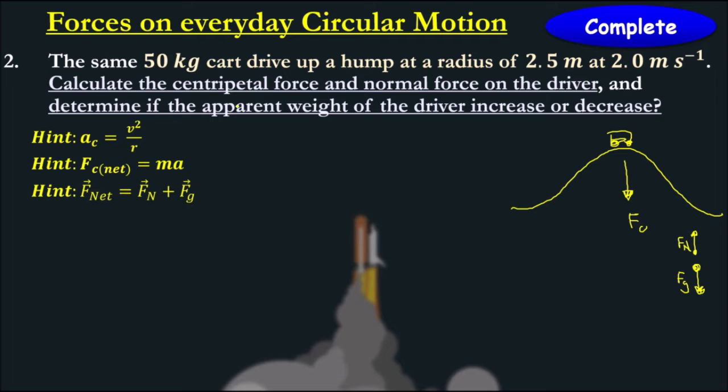Let's try and find the centripetal force. So 50 times 2 meters squared over 2.5. So 80 newtons equals to the normal force plus our weight force, which is negative 490 again.